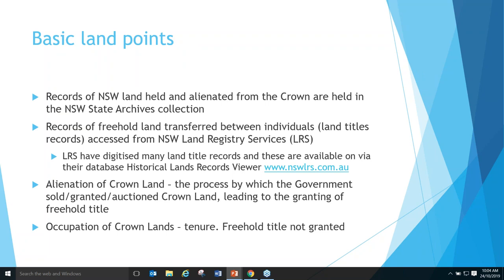Some basic things to get your head around when searching land in the NSW State Archives: records of land held and alienated from the Crown are held in the NSW State Archives collection. When we talk about alienated from the Crown, that's where land is sold or transferred out of government hands into private ownership. Once that land is freehold — what we call land once it's been alienated — and that land is transferred, bought, sold, or given to other individuals, those records are accessed from the NSW Land Registry Services, formerly Land and Property Information, the Land Titles Office, and before that the Registrar General's Office.